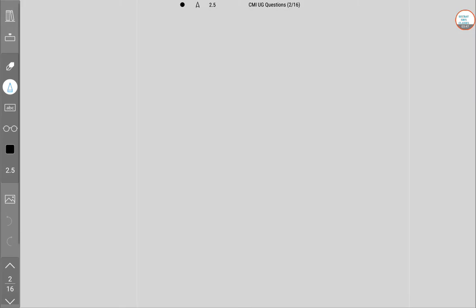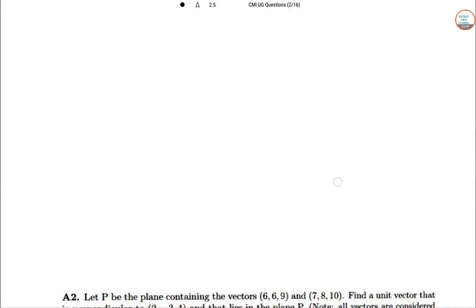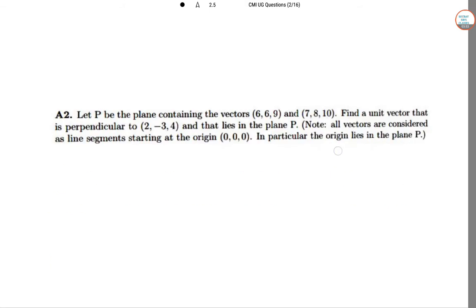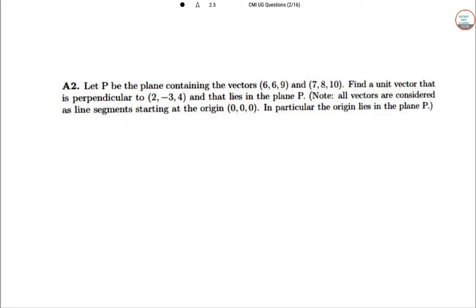Let's go to the next one. Let P be the plane consisting of vectors 6, 6, 9 and 7, 8, 10. Two vectors. Find a unit vector that is perpendicular to 2 minus 3, 4 and that lies on a plane P. And we have to note that all vectors considered in the line segment starting with the origin 0, 0, 0 in a particular origin of P.